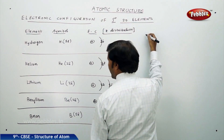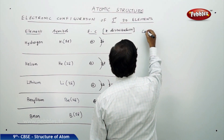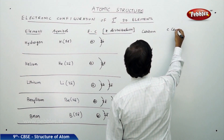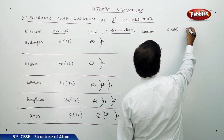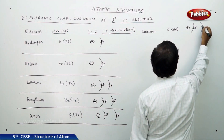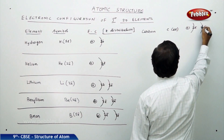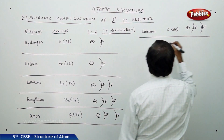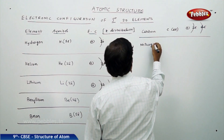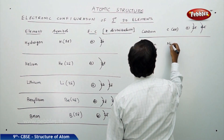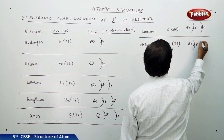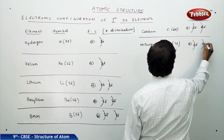Carbon, symbol C, has 6 electrons: nucleus, first shell 2 electrons, second shell 4 electrons. Nitrogen, symbol N, has 7 electrons: nucleus, first shell 2 electrons, second shell 5 electrons.